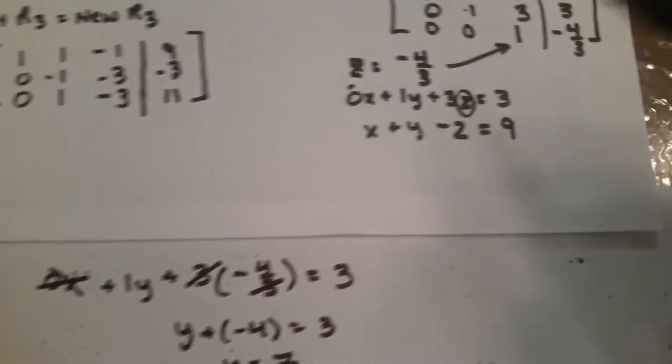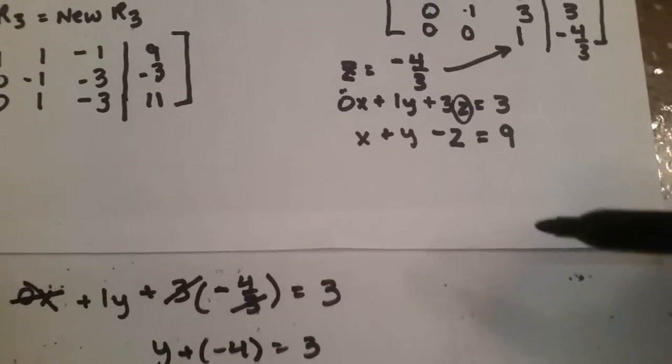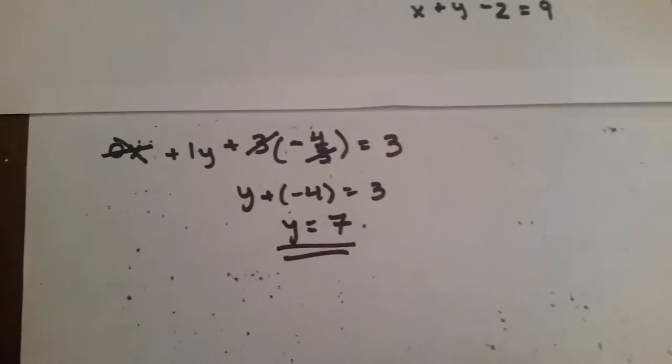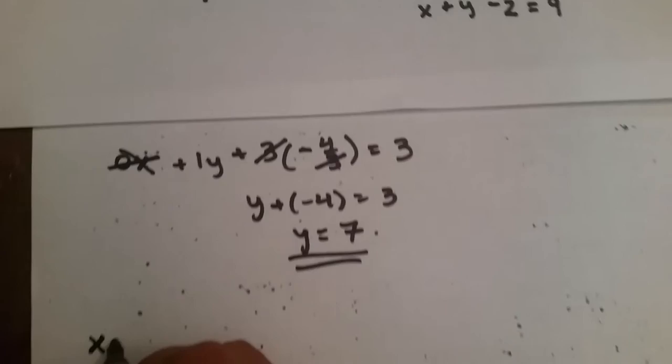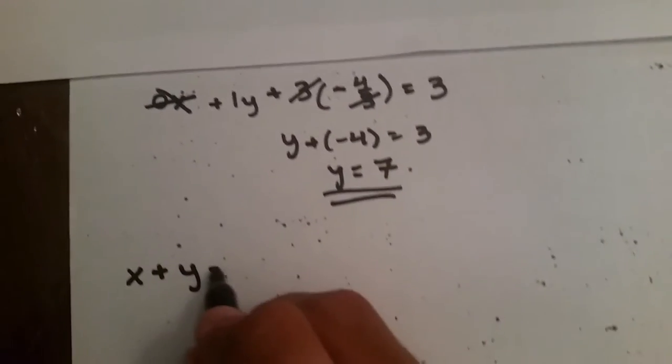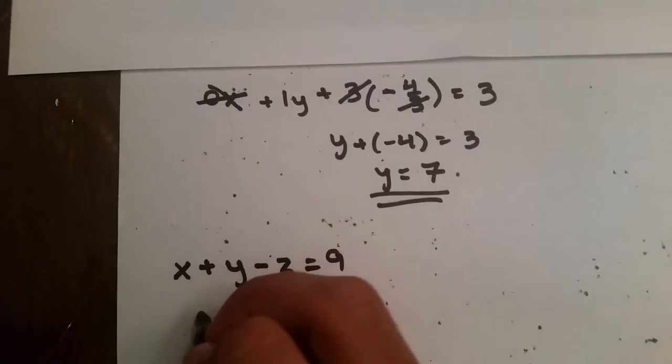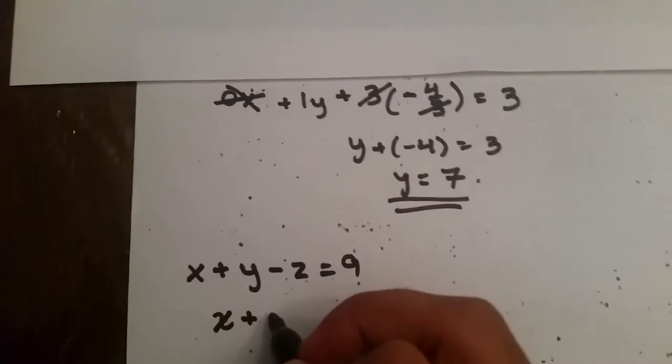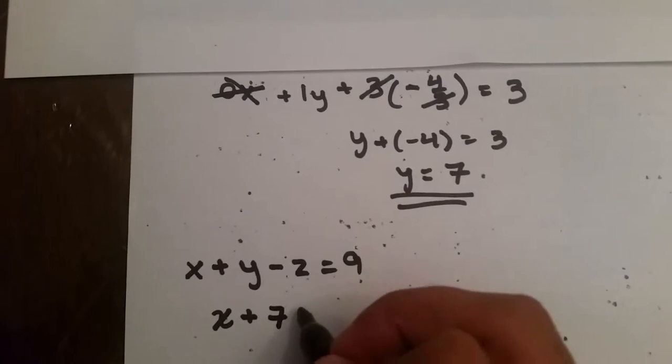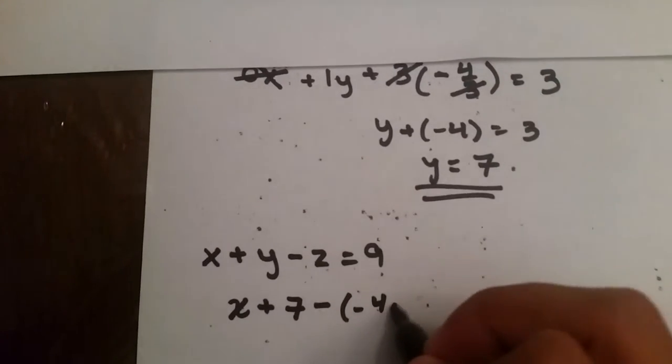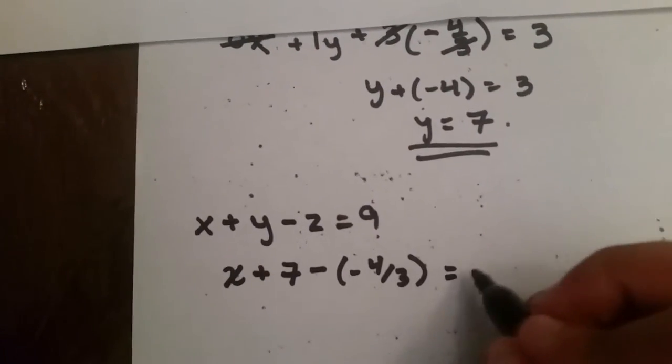And finally, now that we know that z equals negative 4 over 3, and y equals 7, we can do x plus y minus z equal to 9. Where x is unknown, our y value is 7, and our z value is 4 over 3, and that equals 9.